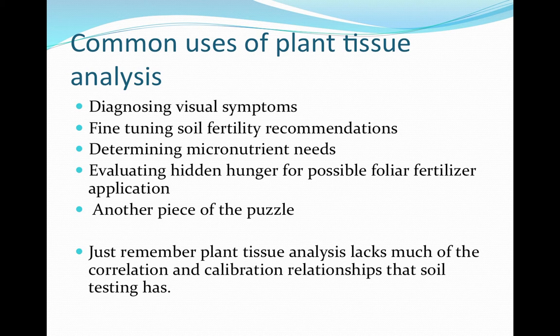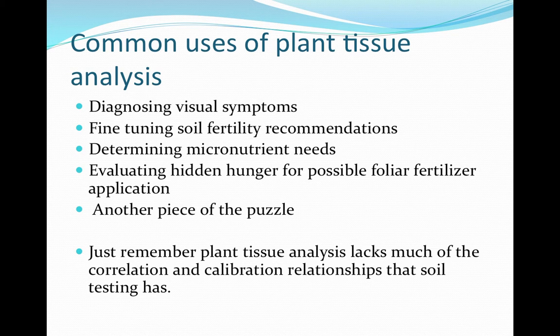One of the most common and helpful uses of plant tissue analysis is diagnosing visual symptoms in the field. You go out there, see something wrong — maybe overall chlorosis, yellowing, stunted plants, a purpling from sugar buildup, or interveinal striping from certain nutrients. Instead of just guessing and making a fertilizer application — which may not even be a fertility issue — take a sample and send it to the laboratory. We'll get results back within three business days.